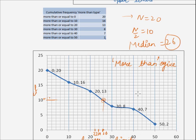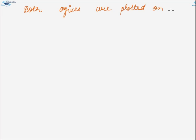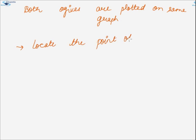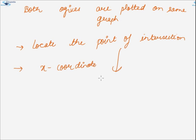Now let us discuss about calculating median using both ogives on the same graph. To estimate median when both ogives are plotted on the same graph, first of all locate the point of intersection. The x coordinate of this point of intersection will be the required median.